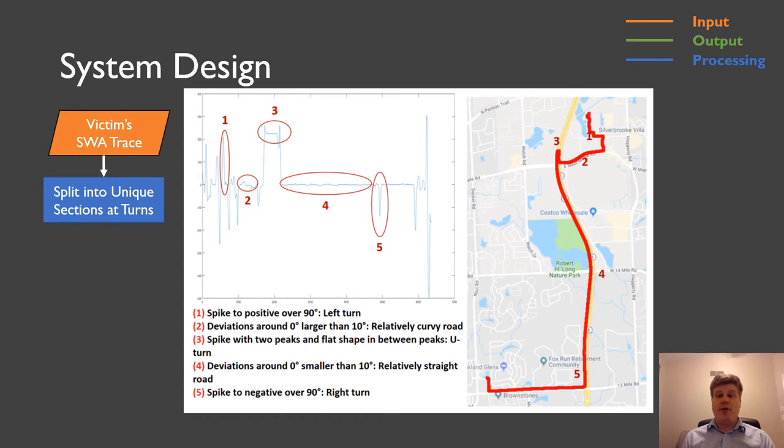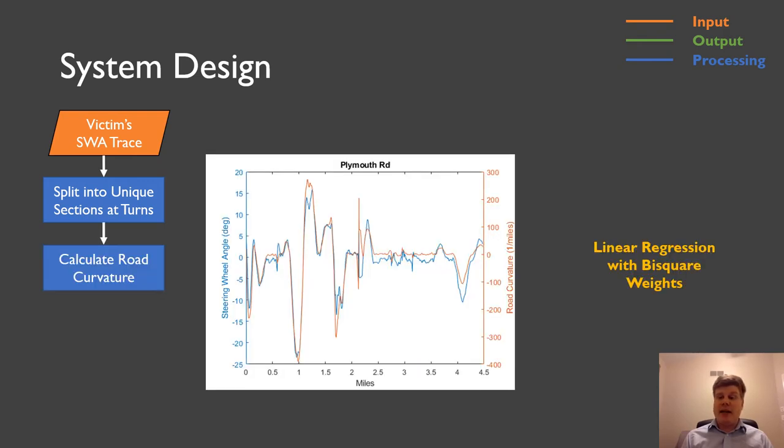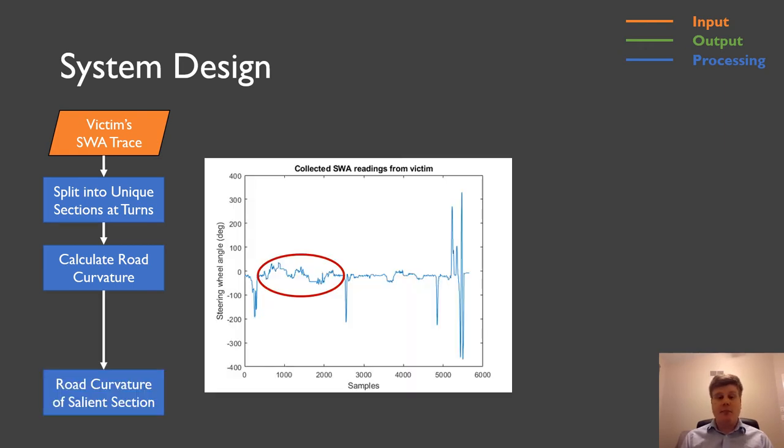And the curvatures are calculated for each of these road segments and stored in that database. Then the attacker is going to take the victim's steering wheel angle trace. Since the victim is not only going to go only on one road for their entire trip, but turn at some point, we need to split it into different unique sections and determine where turns are, like left turns, right turns, and U-turns. After we have that, after we split the entire trace into different sections, we're going to, for each of these sections, we're going to calculate the road curvature. And we're going to exploit the correlation. We're going to train a linear regression model with some training data that we have. And then we will know how to calculate the road curvature for the attack data.